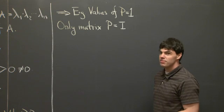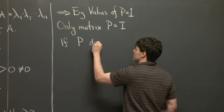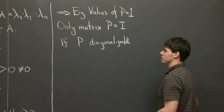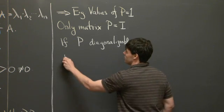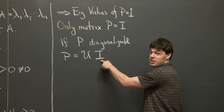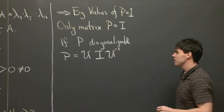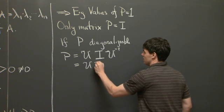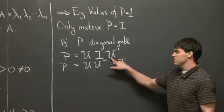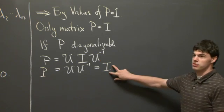How do you actually show that? Well, if P is diagonalizable — and every symmetric matrix is diagonalizable — then you can always write P as some matrix U times a diagonal matrix. In this case the diagonal matrix has eigenvalues 1, so it's actually the identity matrix, times the inverse of the eigenvector matrix. This is just U times U inverse, which gives the identity. So U times the identity times U inverse is just U times U inverse, which collapses back down to the identity. This shows the only matrix with eigenvalues 1 is the identity matrix.